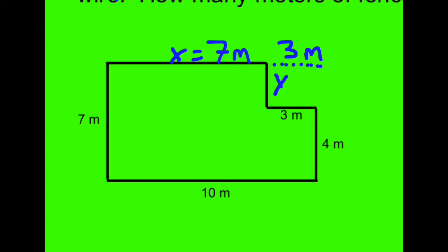Now let's look at the y distance. From here to here, where I'm outlining right now is 4 meters. From here to here is 7 meters, which means this distance y must be 3 meters, because 4 plus 3 makes 7. This entire side would have to be 7, because this side is 7. So now we have all our measurements to measure the distance around this garden.